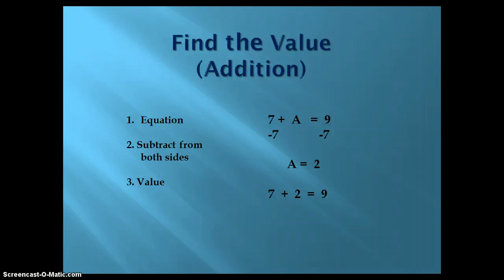Continuing on with finding the value through addition, we start with the equation, which is 7 plus A equals 9. Second, we want to subtract the number from both sides. So, we subtract 7 from 7, and subtract 7 from 9. Therefore, we are left with A equals 2.